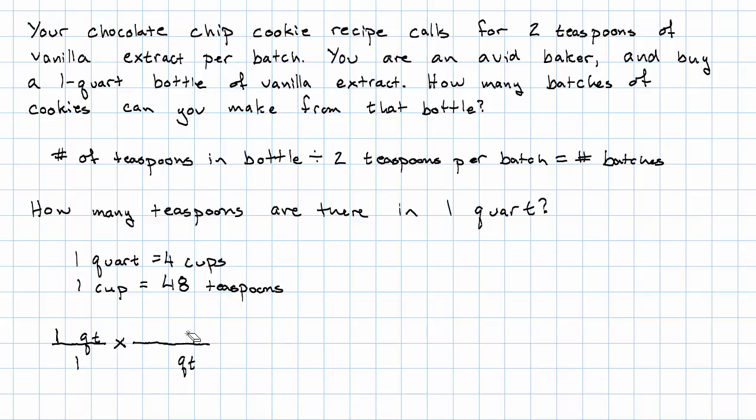we're going to set up two conversion factors. Quarts are in the denominator of the first one, so they'll cancel out. Teaspoons are in the numerator of the second one. And then we'll have the same unit in the first numerator and the second denominator. Where are we going to come up with that unit? Well, we know that one quart is four cups and that one cup is 48 teaspoons.